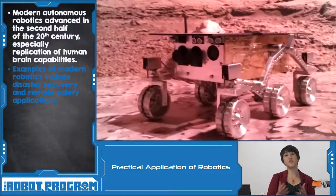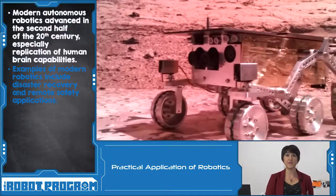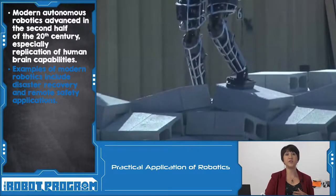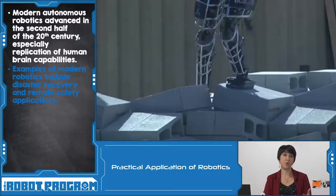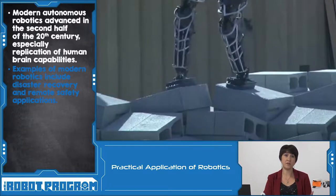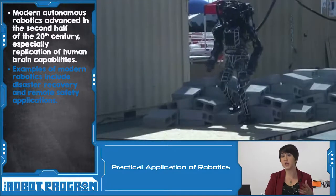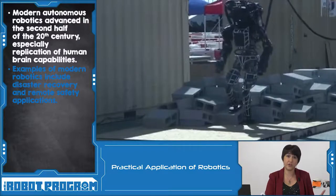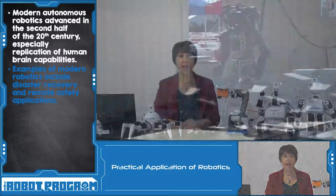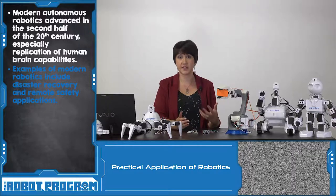We see all sorts of different modern applications that use robotics. That can be anything from safety — how can we send in a robot for disaster relief? Maybe it's bomb diffusing. Somewhere where a human would be unsafe, we could send in an artificial human to do the same task. And in order to achieve that kind of task we need to look at things like sensors.